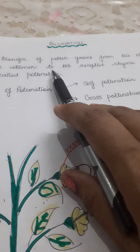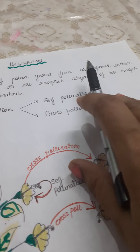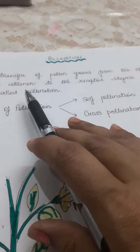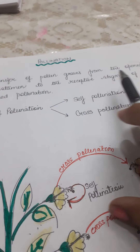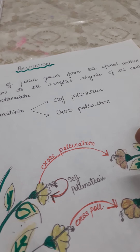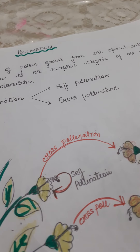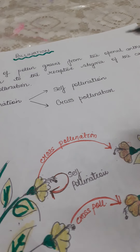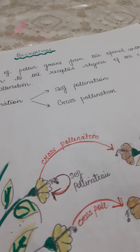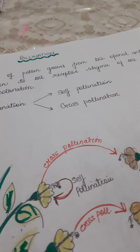What is pollination? Pollination is simply the transfer of pollen grains from the opened anther of one flower to the receptive stigma of the same flower or a different flower. In simple language, pollination refers to the process of transferring the pollen grains or male gametes from one flower to the stigma of another.